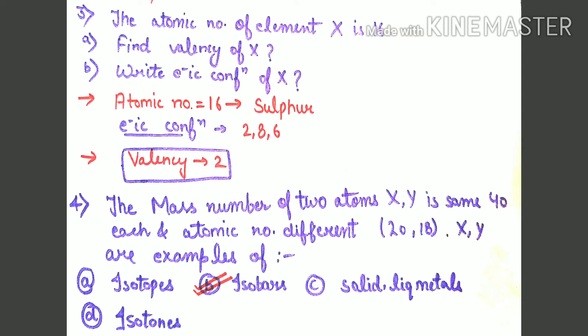The mass number of atoms is 40 but atomic numbers are different, X is 20 and Y is 18. Isotones means same number of neutrons, which is not possible here. Isotopes means same atomic number, but here atomic numbers are different - one is 20, the other is 18. But atomic mass is the same, so they are isobars. Second option is correct.